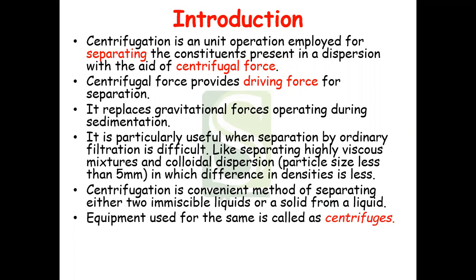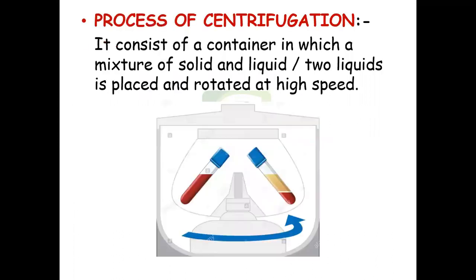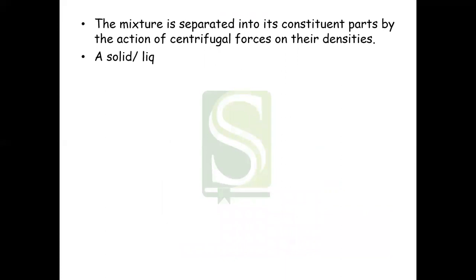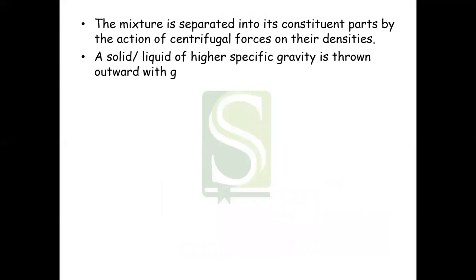Equipment used for the process is called a centrifuge. The process of centrifugation consists of a container in which a mixture of solid and liquid, or two liquids, is placed and rotated. This test tube is placed in a chamber and the chamber is rotated at very high speed, and due to that centrifugal force, it acts on the constituents. The mixture is separated into its constituent parts by the action of centrifugal forces on the densities.